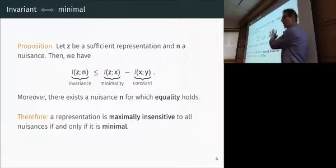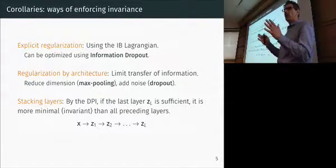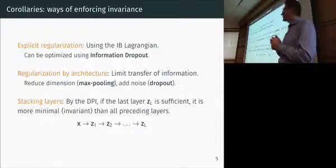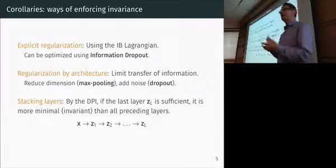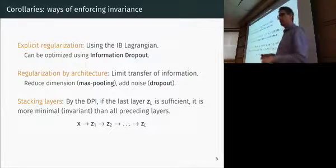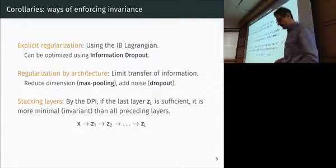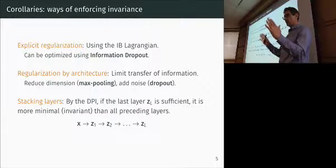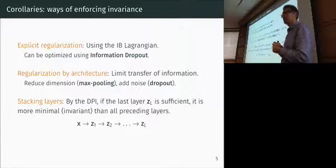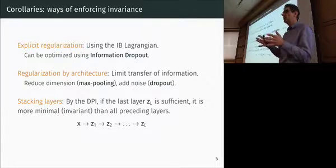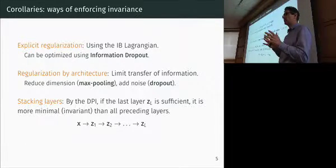The consequence is that as long as you have an architecture you can train, you benefit by inserting bottlenecks — either explicitly by adding a regularizer, or through architectural features like dropout or pooling, or by stacking layers. Here's a counterintuitive result: if you have a sufficient representation, the more layers you stack — the more parameters you have — the more minimal you are, and therefore the more invariant. This is because minimality is measured not in terms of dimensionality but in terms of information.